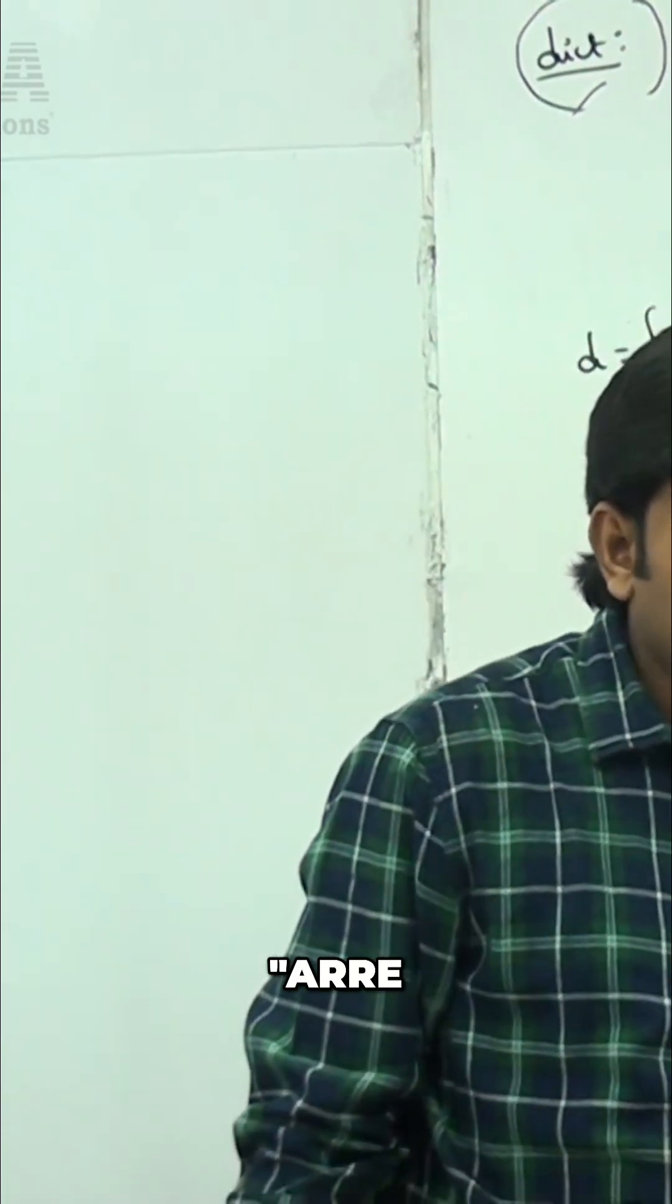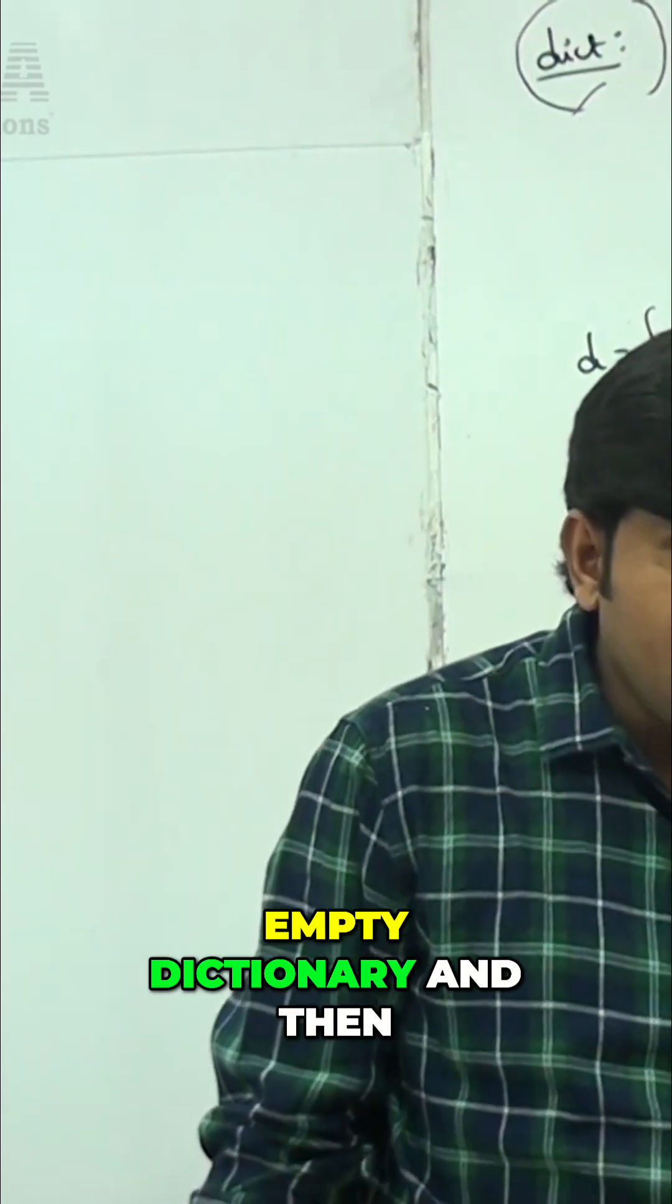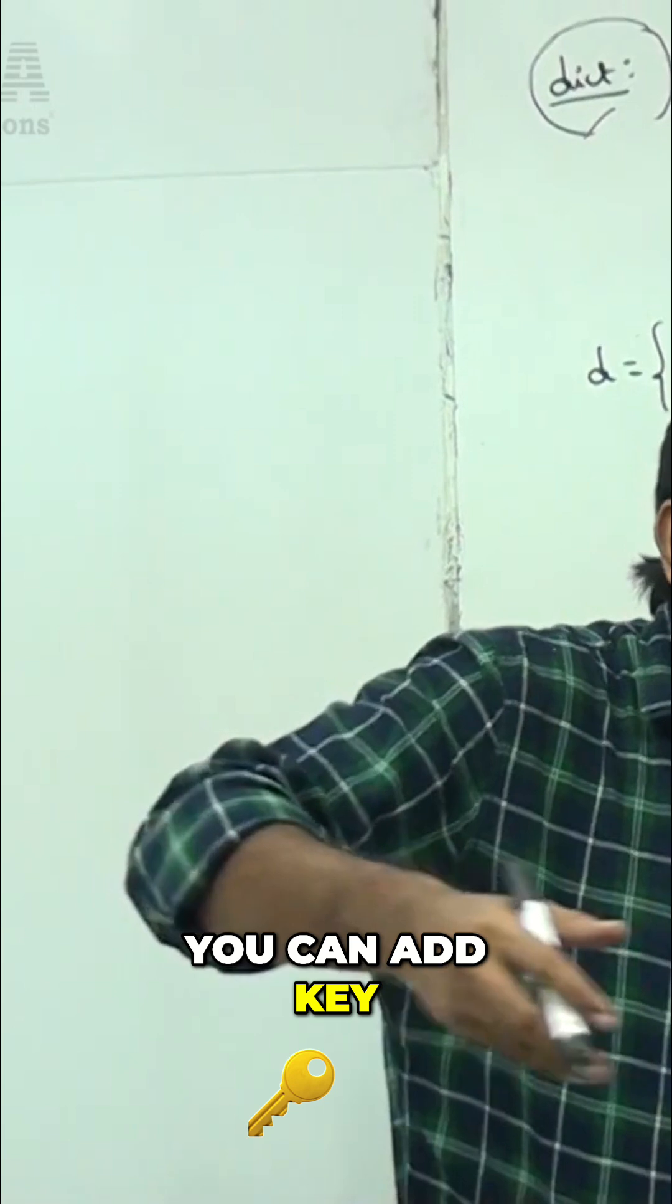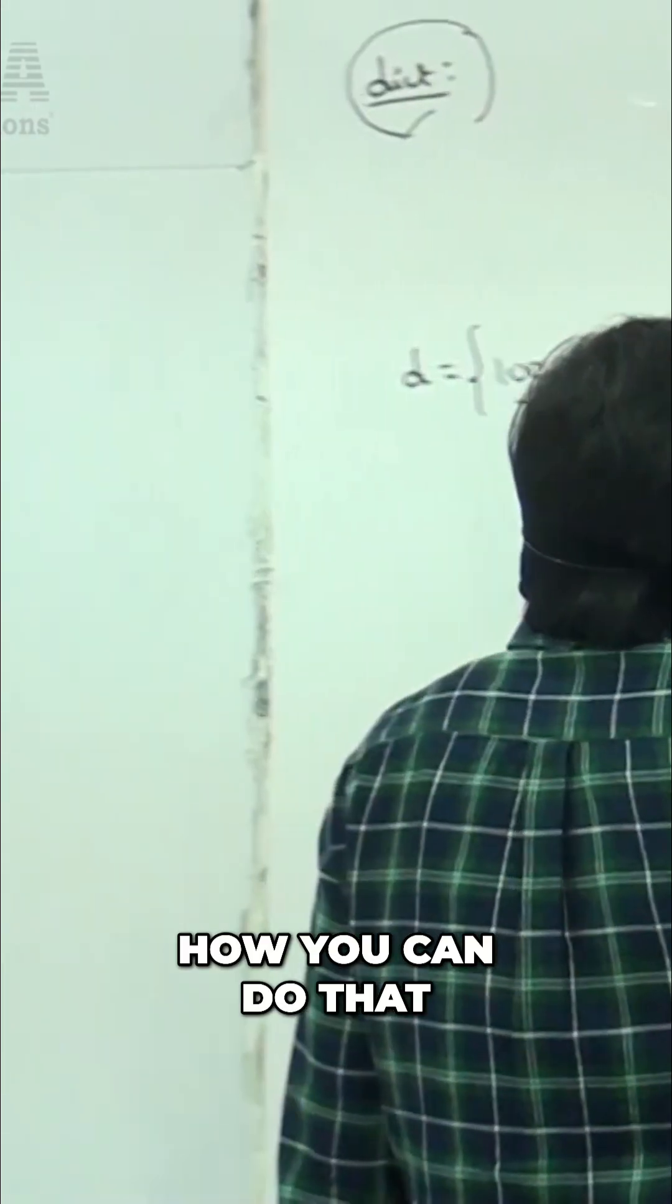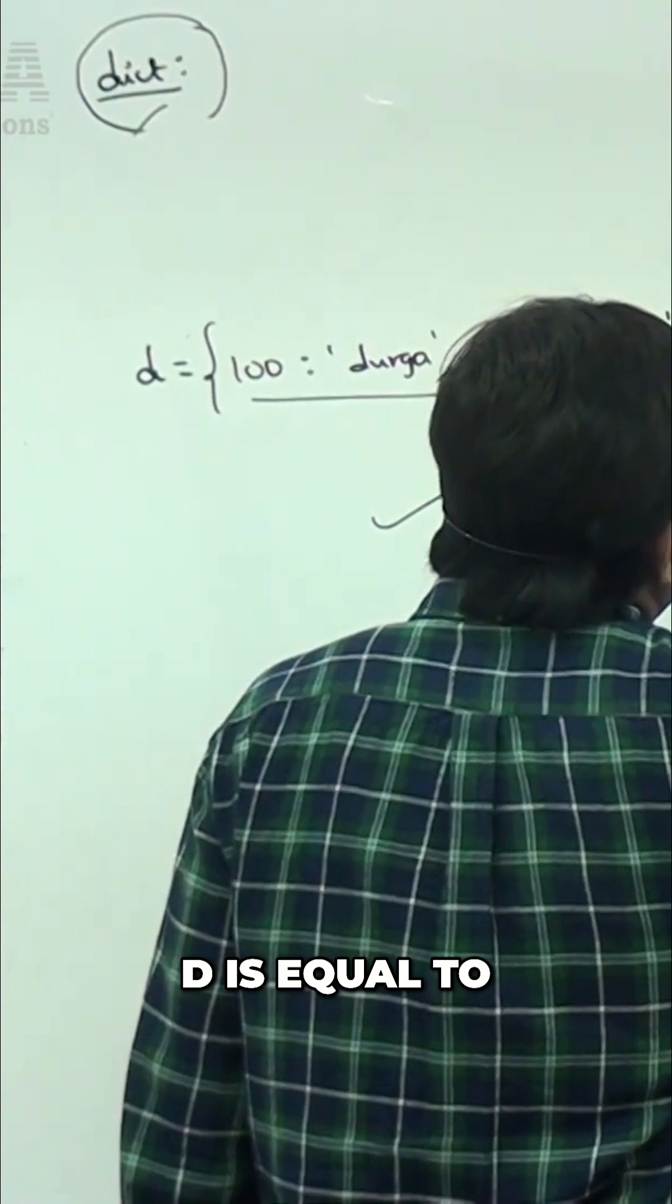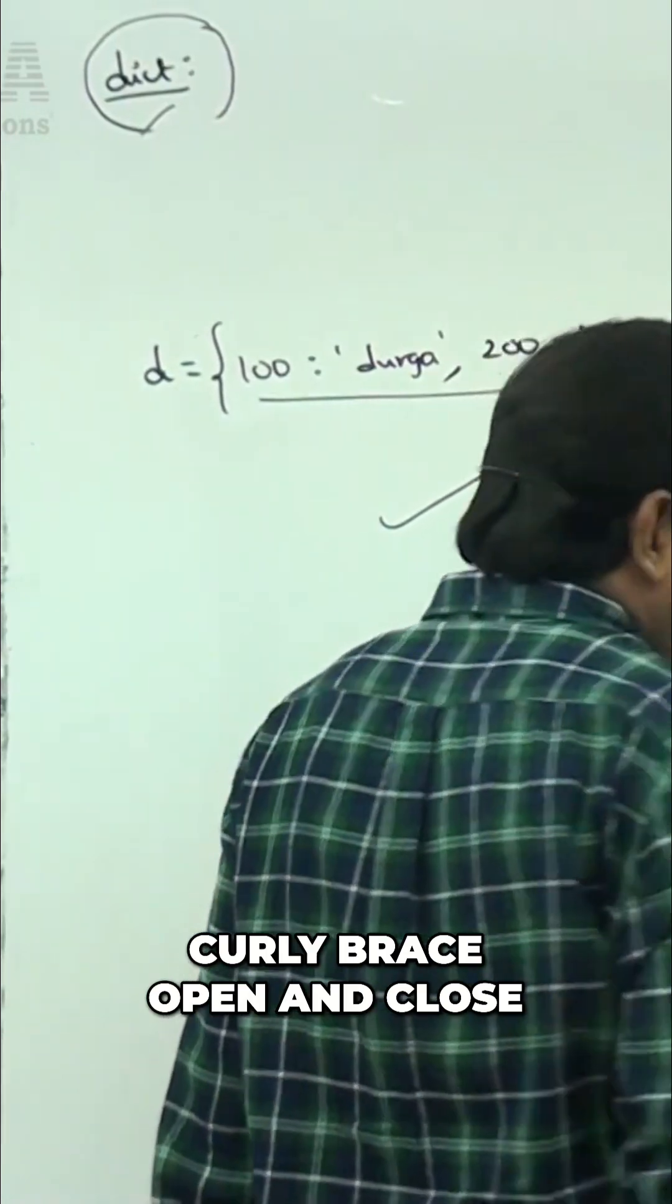Sometimes my requirement is to create an empty dictionary and then add key-value pairs. How can you do that? d equals curly brace open and close. This is how you create an empty dictionary.